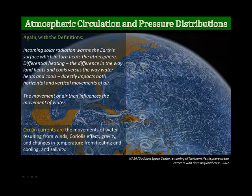Ocean currents are the movements of water resulting not only from winds, but also from the Coriolis effect, from gravity and changes in temperature from heating and cooling, and from salinity. So ocean currents are really a complicated process — they're as complicated in their movements as air is in its movement.